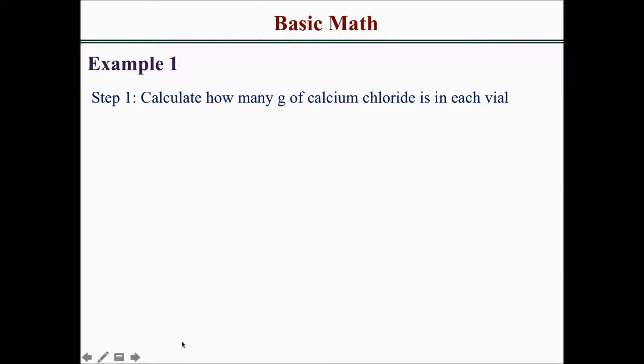First, you want to calculate how many grams of calcium chloride is in each vial. Since it's 10%, that means there's 10 grams in every 100 mLs of solution. Since you only have 5 mLs, there's 0.5 grams in each vial.